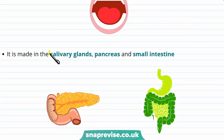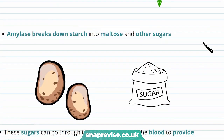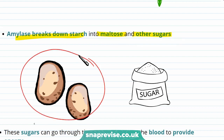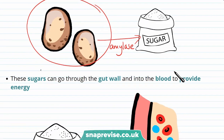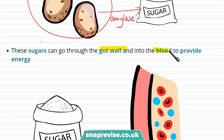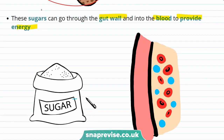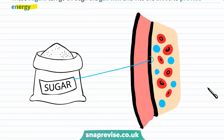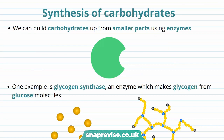Amylase is made in the salivary glands, the pancreas, and the small intestine. Amylase breaks down starch into maltose — found in sweets such as Maltesers — and other sugars. So amylase can break down the starch in potatoes into simple sugars. These sugars can go through the gut wall and into the blood to provide energy, and are transported to the cells that need them.